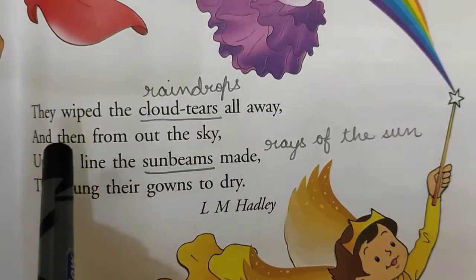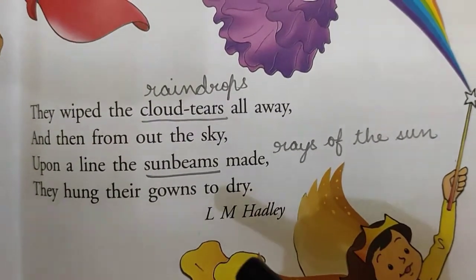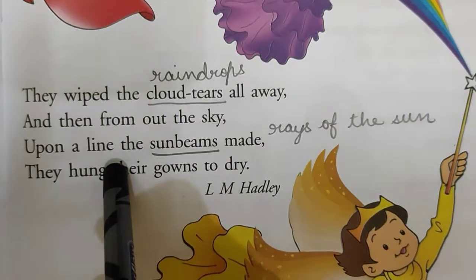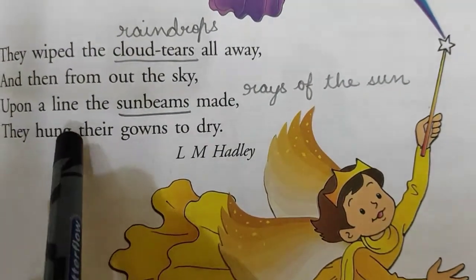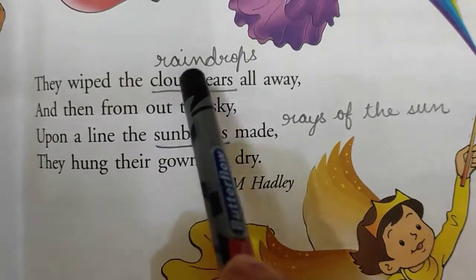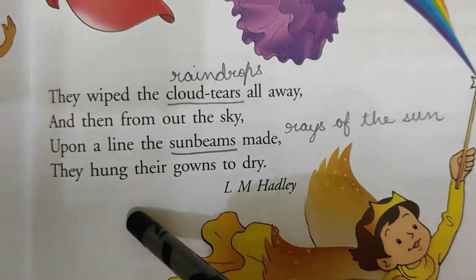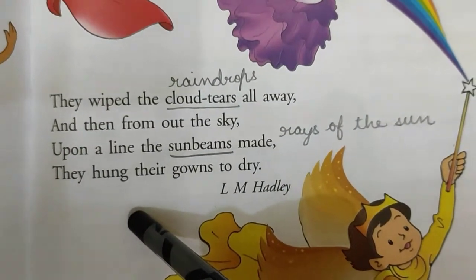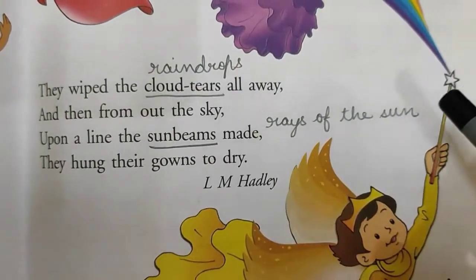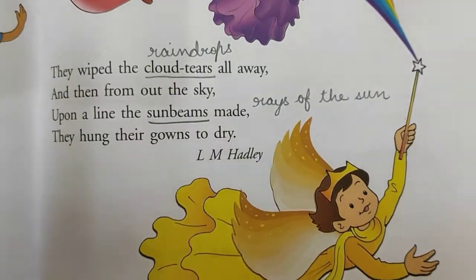When these fairies came there to dry the tears of the clouds, they wiped the tears — means the raindrops. And then the rays of the sun started shining in the sky, and it seemed as if they had hung their gowns to dry. As I told you before, when the rain is over, the sun starts shining in the sky and the rainbow also appears, and it looks very beautiful. So this was all regarding the revision of this poem.